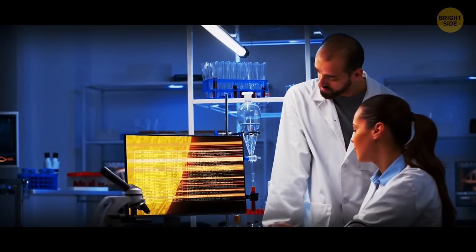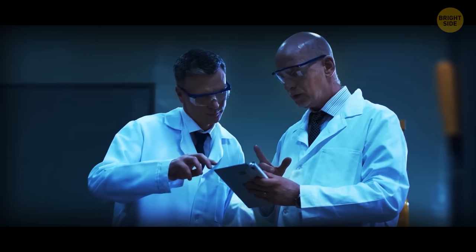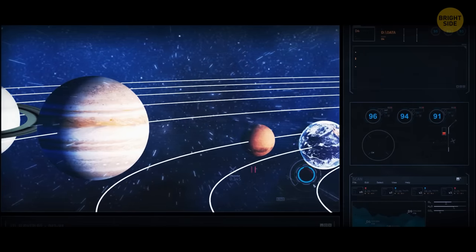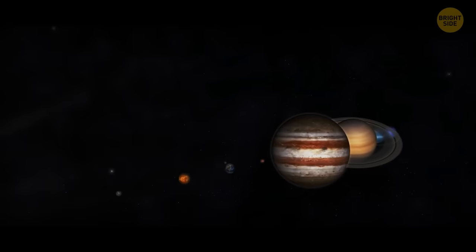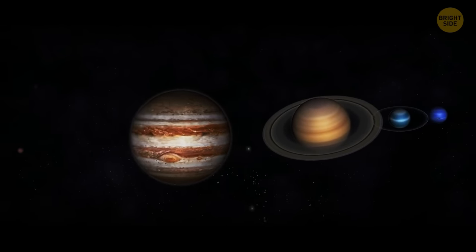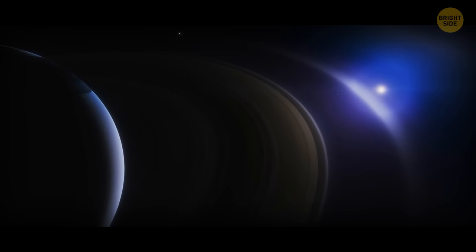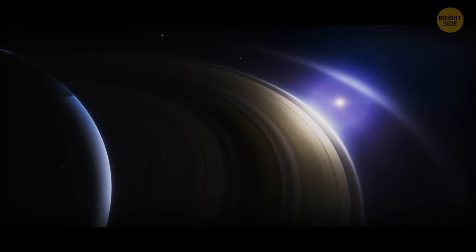Scientists still don't know why the gas giants have rings, but they think it could be because they formed in the outer solar system. Rocky planets formed in the inner area of our solar system, which is why they were more protected from potential impacts and collisions that might have formed rings around them. Or, the reason is that the bigger planets have a larger volume, which allows a ring system to remain stable.